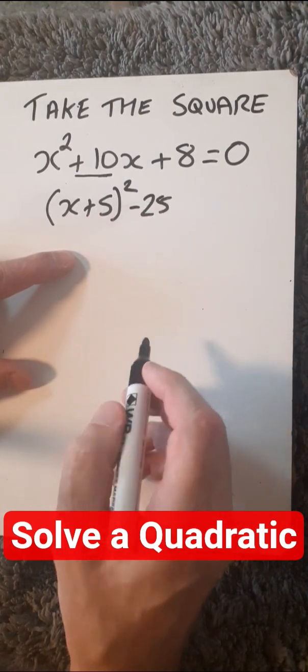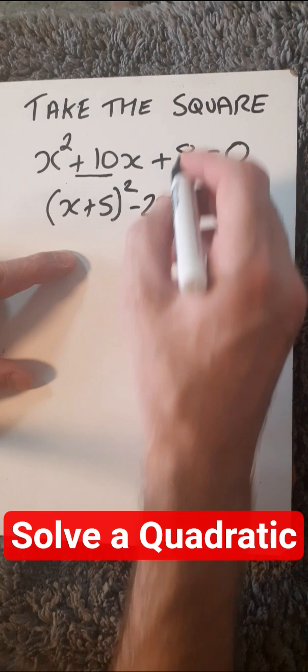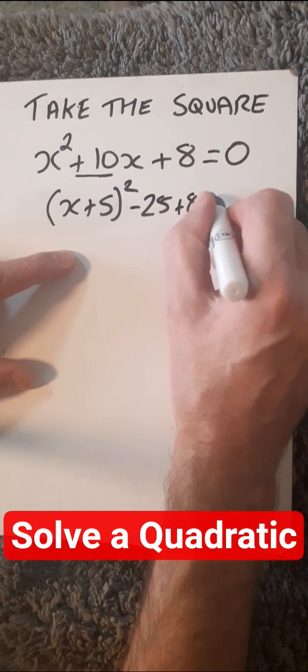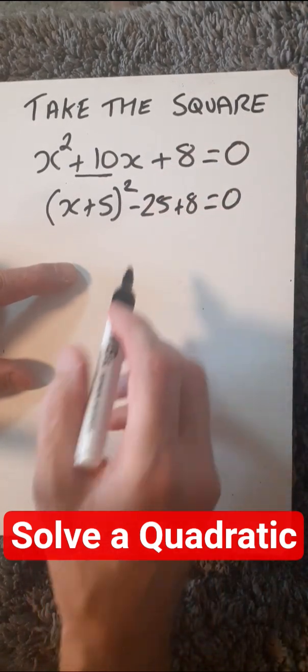So, minus 25 and then 8, bring that down and just add 8 and equals 0.